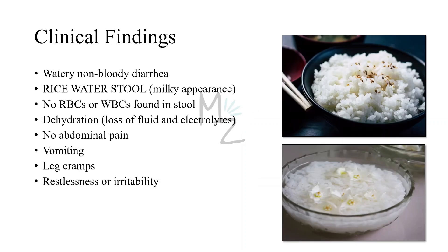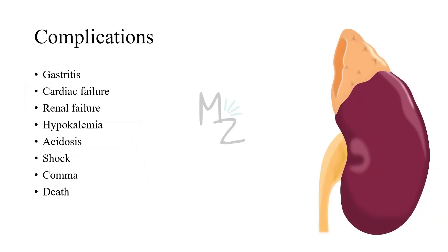Clinical findings. Watery diarrhea in large volumes is the hallmark of cholera. There are no red blood cells or white blood cells in the stool — this is non-bloody diarrhea. 'Rice water stool' is a term applied to this non-bloody effluent, as it resembles boiled rice water. There is no abdominal pain, but subsequent symptoms are due to marked dehydration. Some people may experience vomiting, leg cramps and restlessness. If untreated, cholera can lead to cardiac failure, renal failure, acidosis, hypokalemia — due to loss of bicarbonate and potassium — and even shock, coma and death.